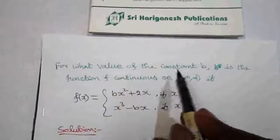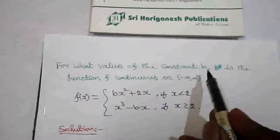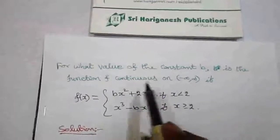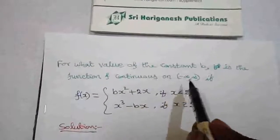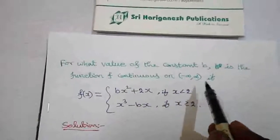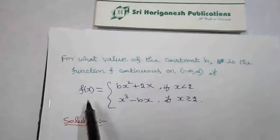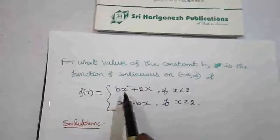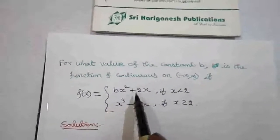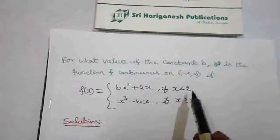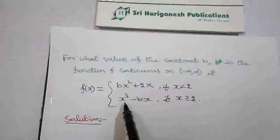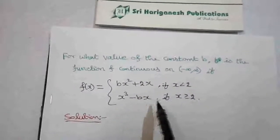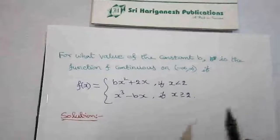For what value of the constant b is the function f continuous on minus infinity to plus infinity? f(x) equals bx squared plus 2x, if x is less than 2, and x cubed minus bx, if x is greater than or equal to 2.